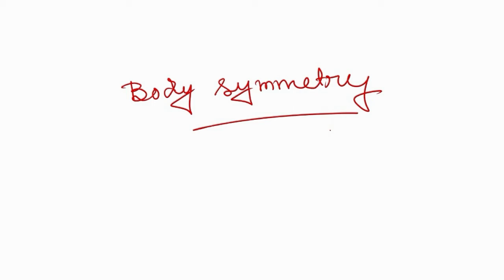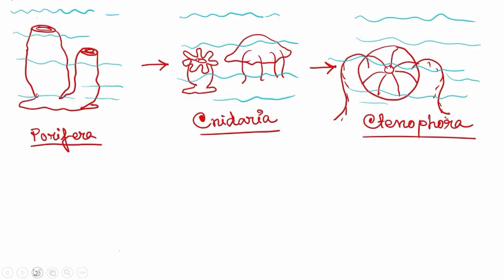Now, we will look at the symmetry, body plan, coelom, etc. of these phylums. Let's start with body symmetry. Starting from Porifera. If we try to find the symmetry of Porifera, we can see that no line on the body of Porifera can divide it into equal parts. So this Porifera is having no symmetry or various symmetry in its body.